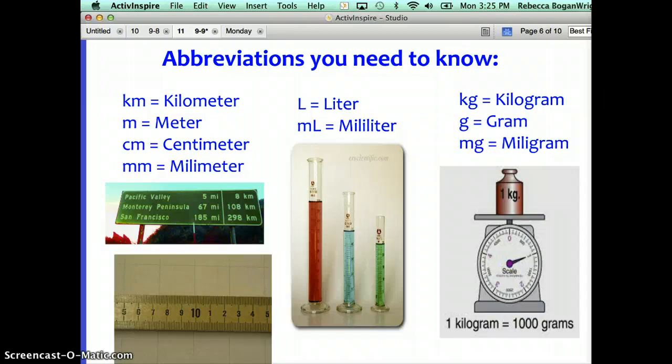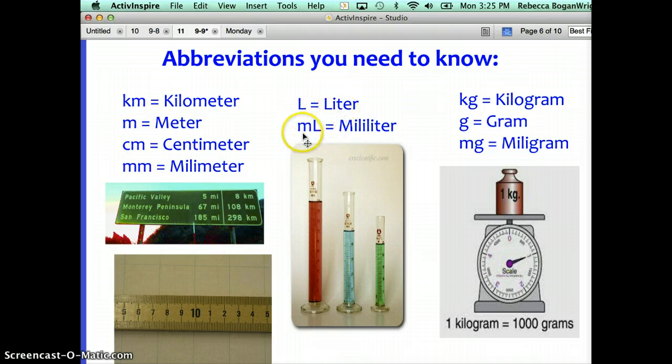There are some abbreviations that you'll need to know when using the metric system. For measuring distances and lengths, km equals a kilometer, m equals a meter, cm equals a centimeter, and mm equals a millimeter. For measuring volume with liquids, capital L equals liter, and mL stands for milliliter. When measuring mass, we have kg equals a kilogram, g equals a gram, and mg equals a milligram.